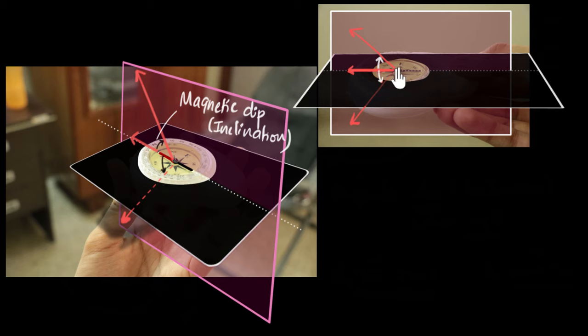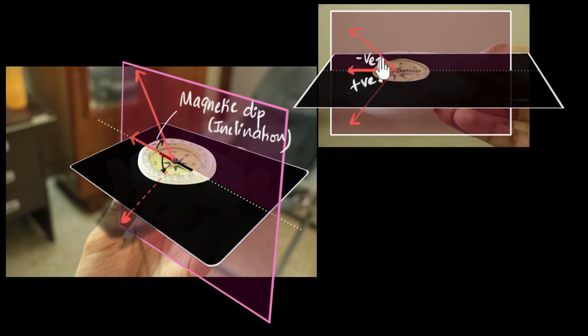If the magnetic field is actually dipping downwards, then this angle we'll call a positive angle. And if the magnetic field is not dipping down but is above the horizontal, then we can still call that a dip — we call that a negative dip.